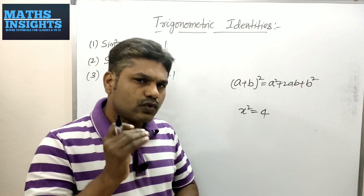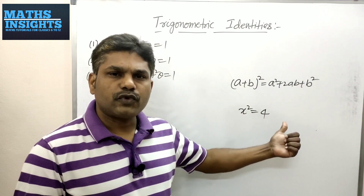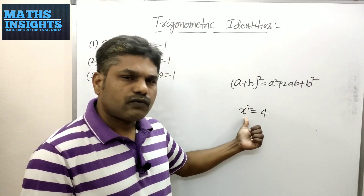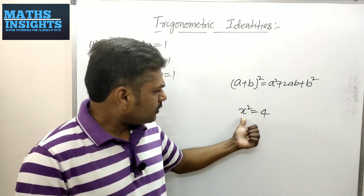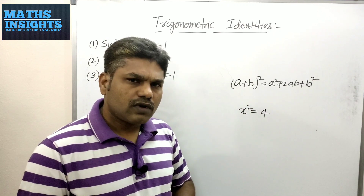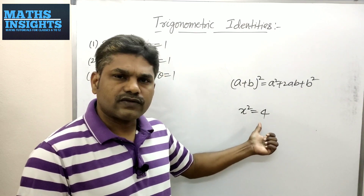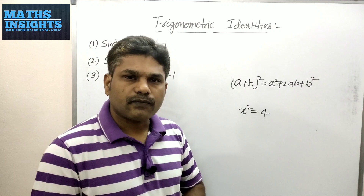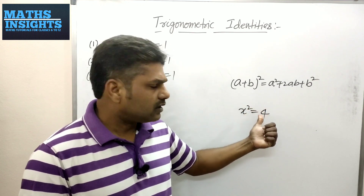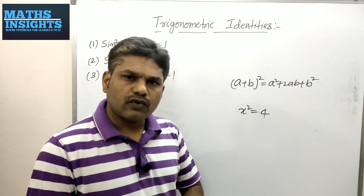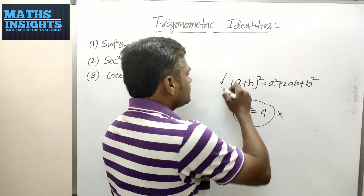If you take another example: x² = 4. Here the variable is x. If you take x = 2 or x = −2, then this will become true — 2² is 4, and (−2)² is also 4. So for these two values it will satisfy. But if you take x = 3, it will not satisfy because 3² = 9, and 9 ≠ 4.